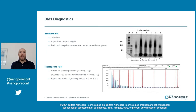Traditionally, diagnostics of DM1 patients has been done by Southern blotting, but this is quite a laborious technique and has generally been replaced by triplet prime PCR. Both methods can detect expansion of the repeat, but not with great precision, and can only detect repeat interruptions in certain cases.